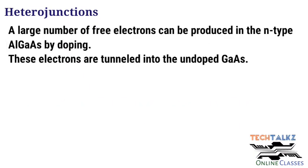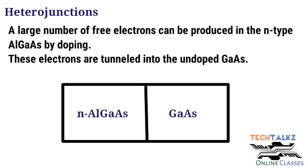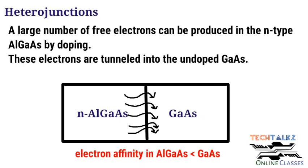Now we can check the attractive features of these AlGaAs/GaAs heterostructures. Through doping, a large concentration of free electrons can be produced in the n-type AlGaAs. When the heterojunction is formed, electrons will transfer from AlGaAs into GaAs — they will be tunnelling from AlGaAs to GaAs — because the electron affinity in AlGaAs is smaller than that of GaAs.